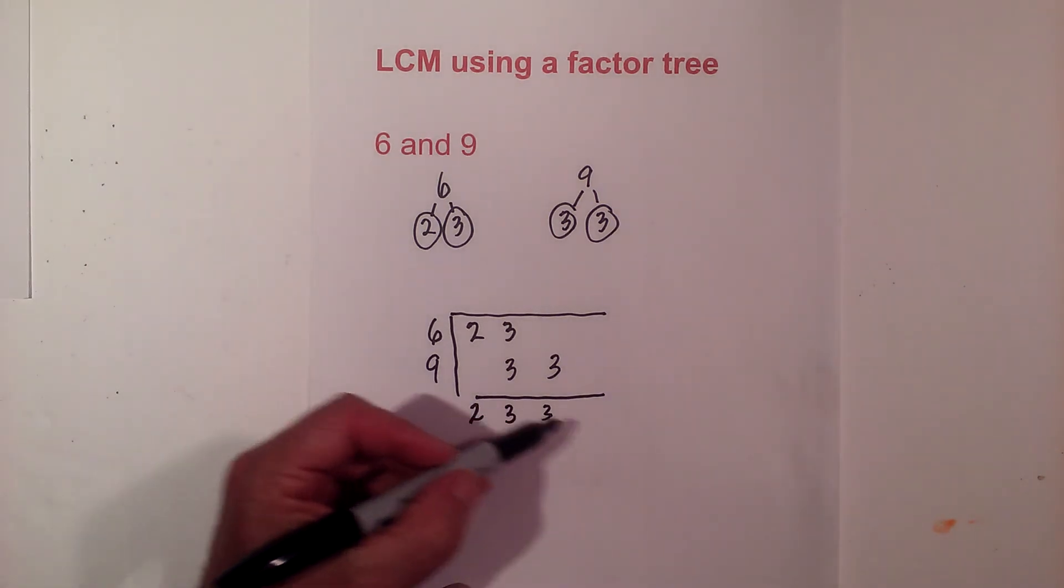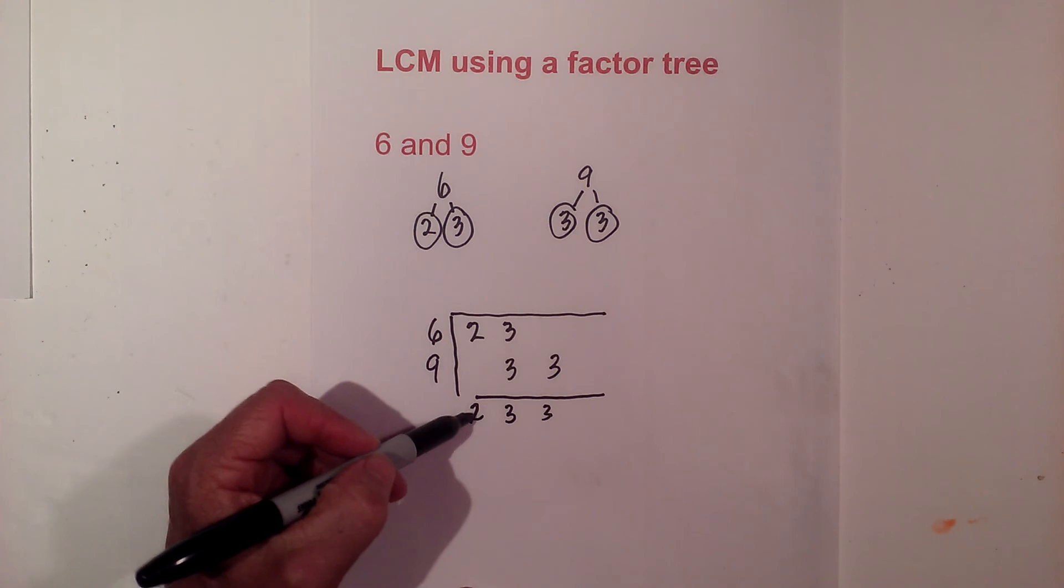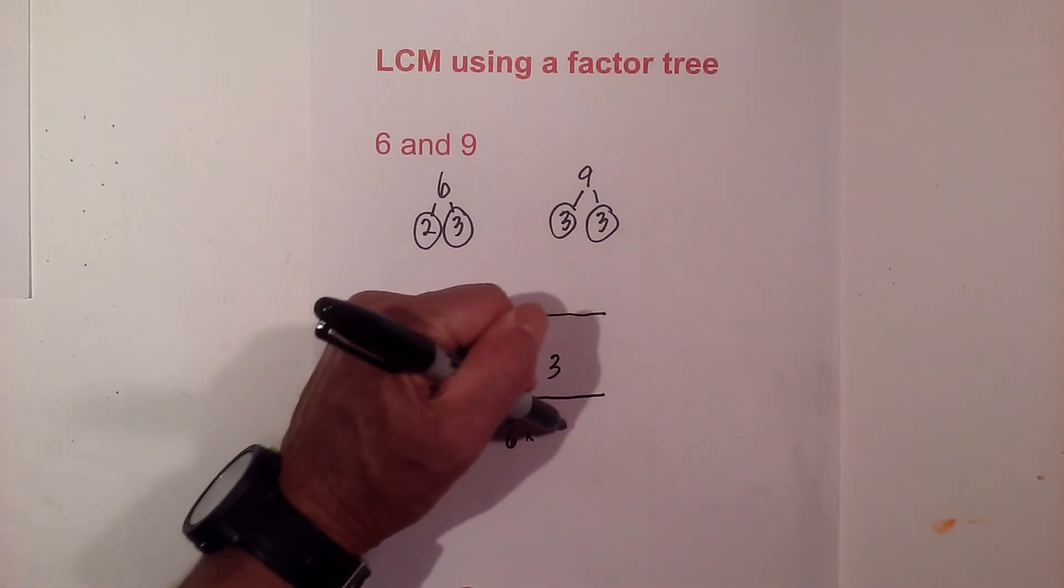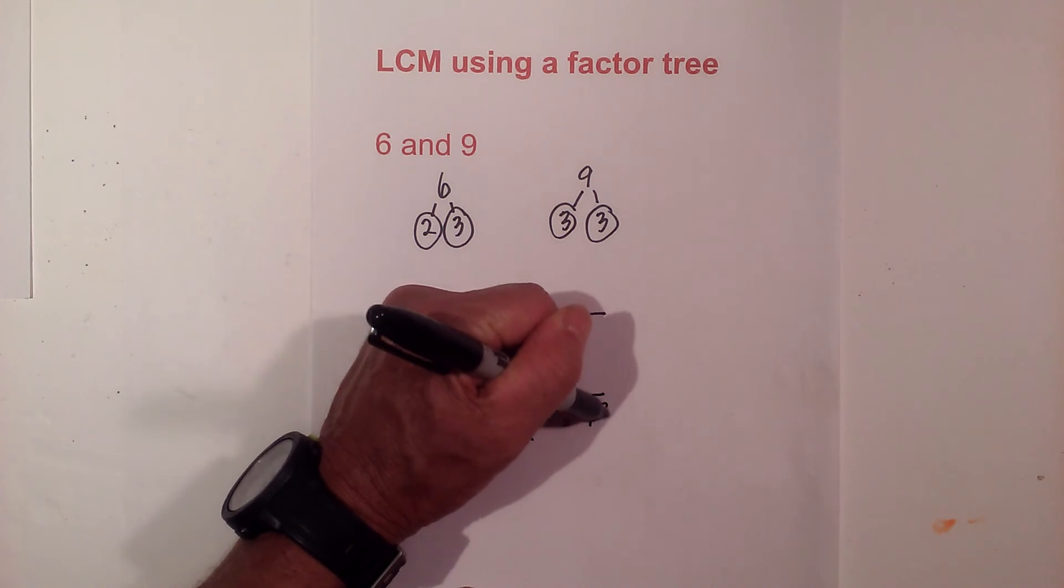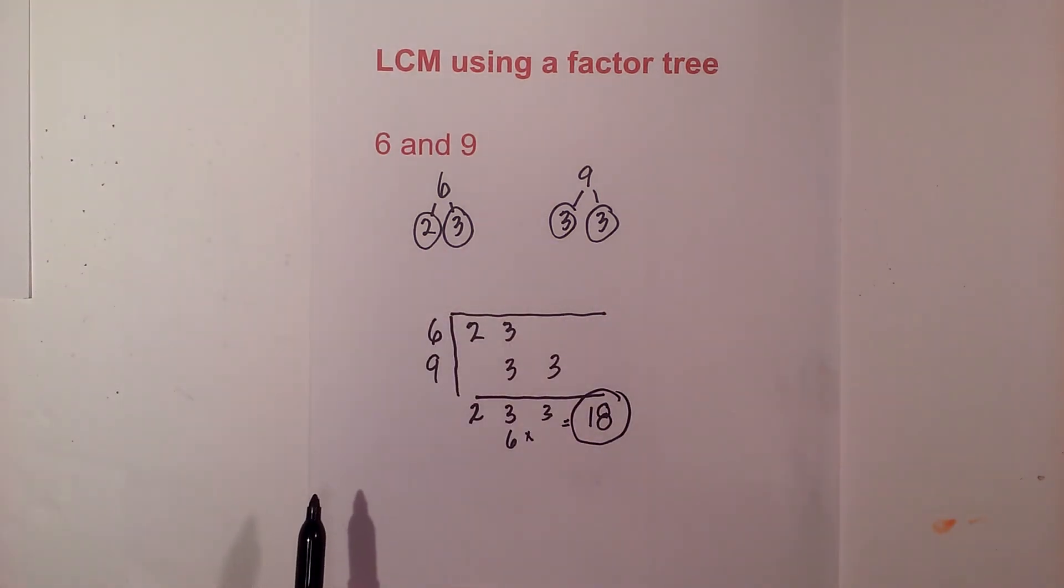I then just multiply these prime numbers together and that gives me the LCM. 2 times 3 is 6 and then 6 times 3 is 18. So the LCM of 6 and 9 equals 18.